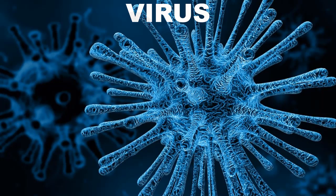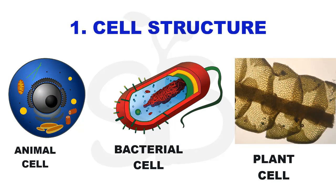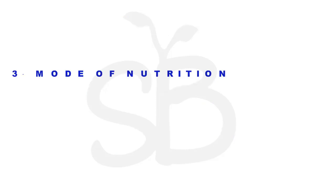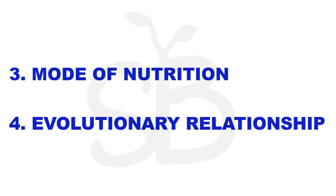However, there are problems with the two-kingdom classification. For example, viruses and other organisms are different. The studies are proven. For example, cell structure, nature of wall, mode of nutrition, habitat, method of reproduction, and evolutionary relationship — these are all different.